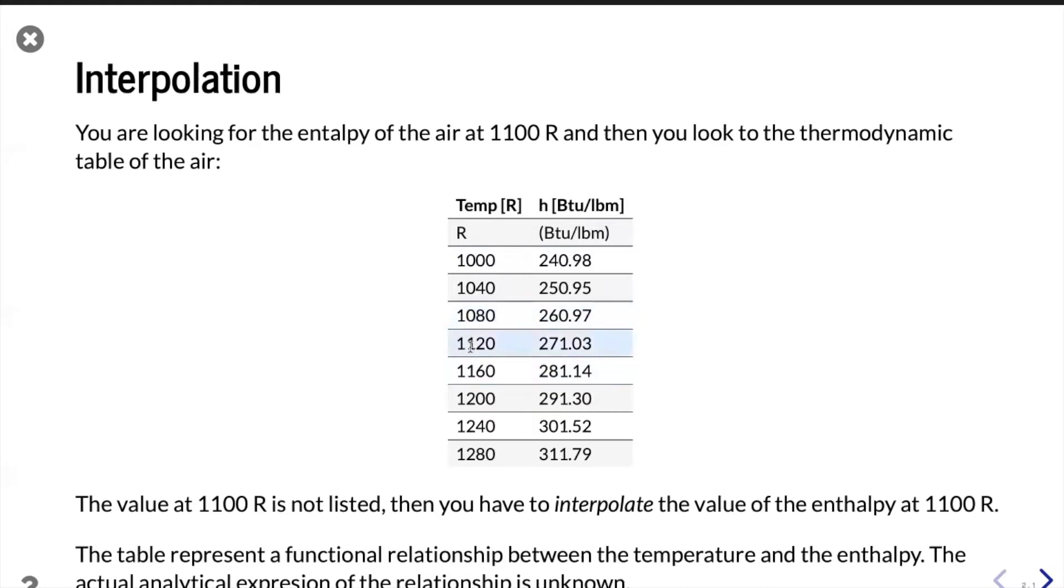We have 1080 and 1120 so there is no 1100, so our value should be somewhere in between 260 to 271. That's the enthalpy that we want to find and in those cases we have to interpolate. There is not an analytical relationship between temperature and enthalpy and for that reason we have to find the approximate value by interpolating.